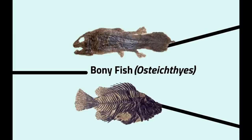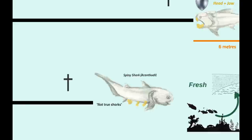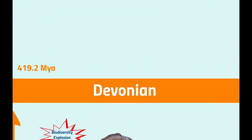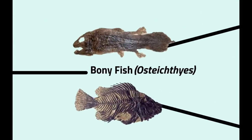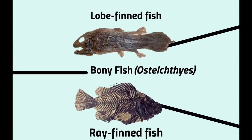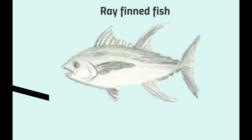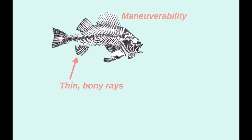Bony fish get their name from the rigid skeleton, which is constructed totally out of bone as opposed to cartilage. This huge lineage first appears in the fossil record in the late Silurian, but remains become more common throughout the Devonian. The Osteichthyes can be divided into two main groups: the ray-finned and lobe-finned fish. Ray-finned fish have fins constructed from thin, bony rays connected with a fine web of skin, and these fins are powered by muscles inside the body. The fossil record suggests that diversity of this class is modest throughout the Devonian, but what they lacked in diversity they made up in numbers.